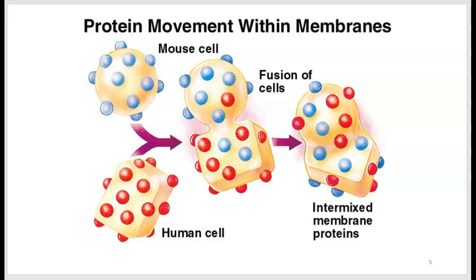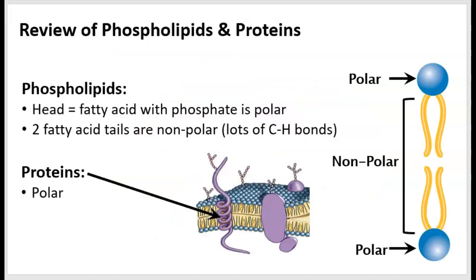If the proteins hadn't been able to move within the phospholipid bilayer, you would expect the blue proteins to be on one end and the red proteins to be on the other end of this bigger cell. So, let's begin talking about cell membrane function in permeability by reviewing the molecules in the membrane. Recall that the phospholipids that form a bilayer are made up of polar heads and non-polar tails. The heads are polar, shown with the blue ball, because the fatty acid has a phosphate group and a nitrogen, and that makes it polar.